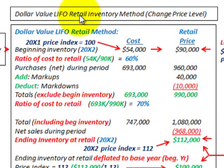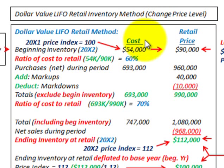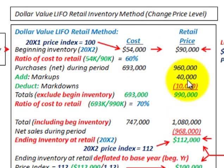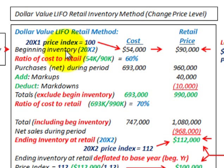Here we're going to be looking at the dollar value LIFO retail inventory method, where we deal with changes in price levels. In this example, we have a retail store with a cost on the merchandise and then an established retail price — the price they're going to be selling at to the customer. The first thing with this LIFO method is you're going to have to separate out your beginning inventory from your current period purchases.